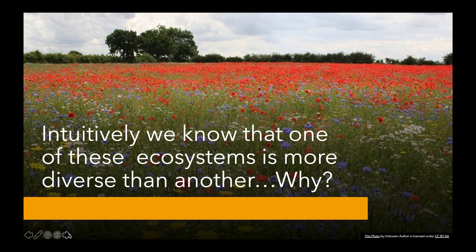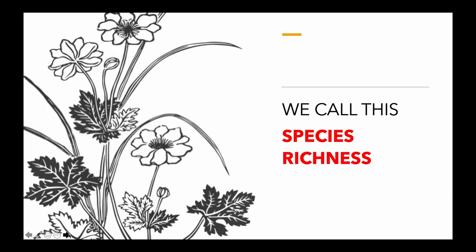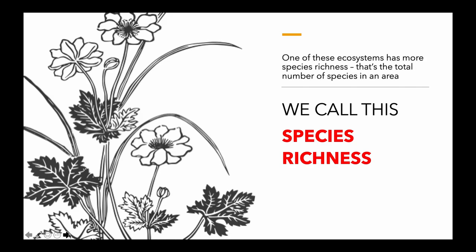And why is that the case? We know that's the case because it has more total species. We call this species richness — the total number of different species in an area.